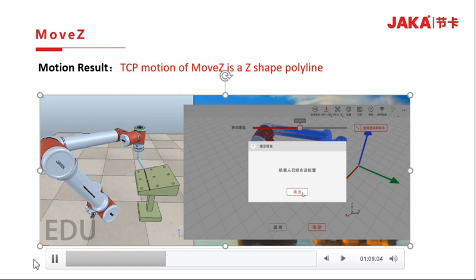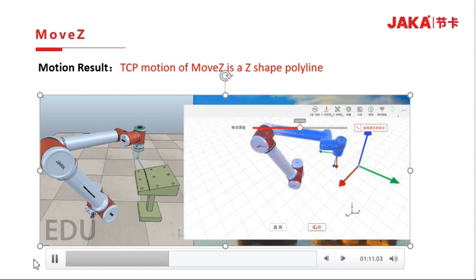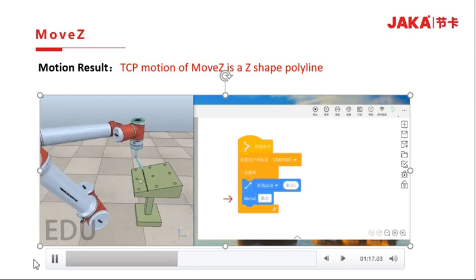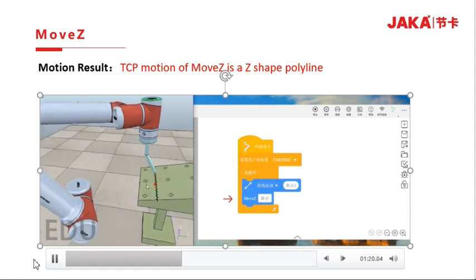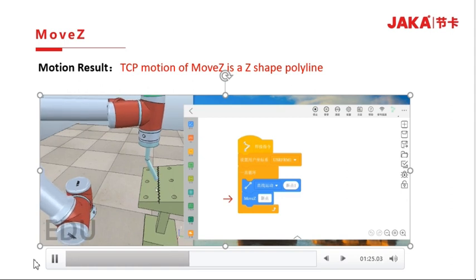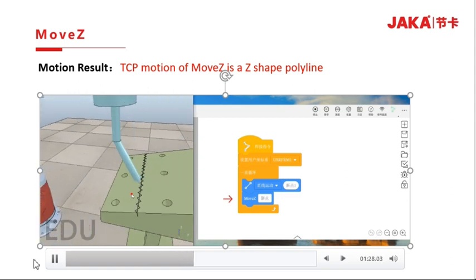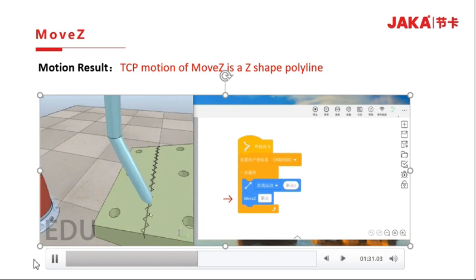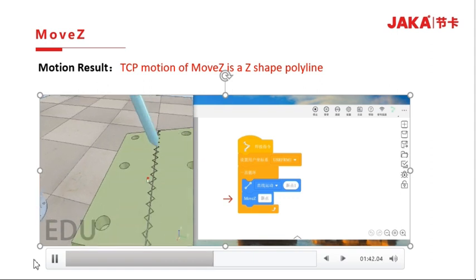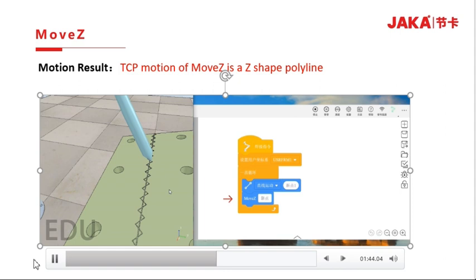Before going back to the initial position and running the program, we can see that the MOVZ path is a Z-shape polyline. The TCP will not pause when reaching the peak or trough.